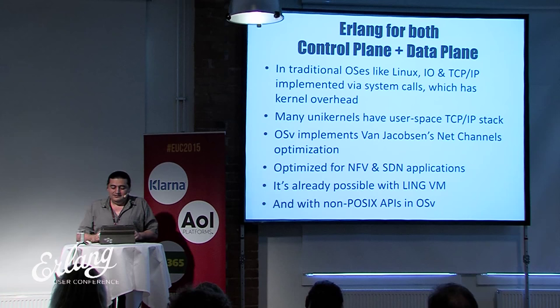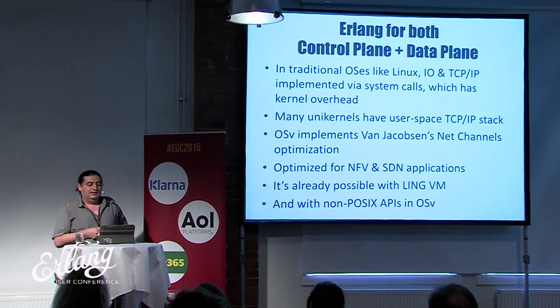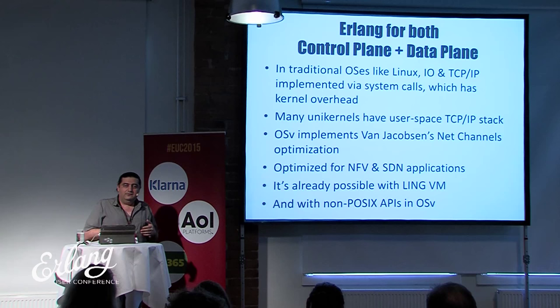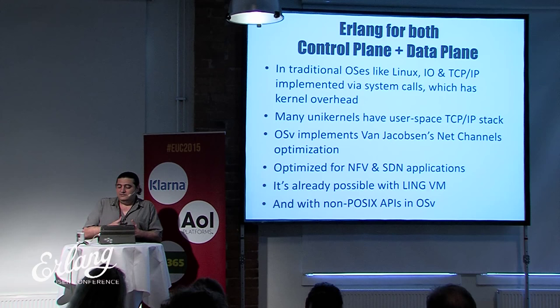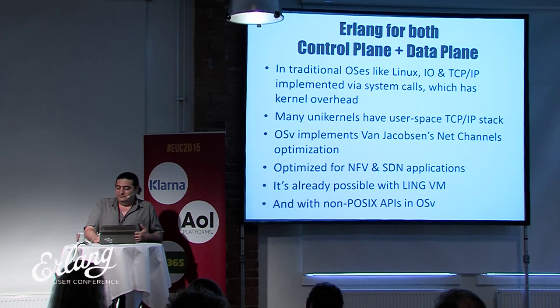Now with unikernel technology — things like LingVM and OSV — it's finally possible to use Erlang for both control plane and data plane. In traditional OSes like Linux, IO and TCP/IP are implemented via system calls with kernel overhead. Many unikernels, including OSV and LingVM, have a user-space TCP/IP stack with no such overhead. OSV also implements the Van Jacobsen net channel optimization, making these solutions ideal for network function virtualization and software-defined networking. This is already possible with LingVM, while Erlang in OSV currently only supports it via non-POSIX APIs in C++.